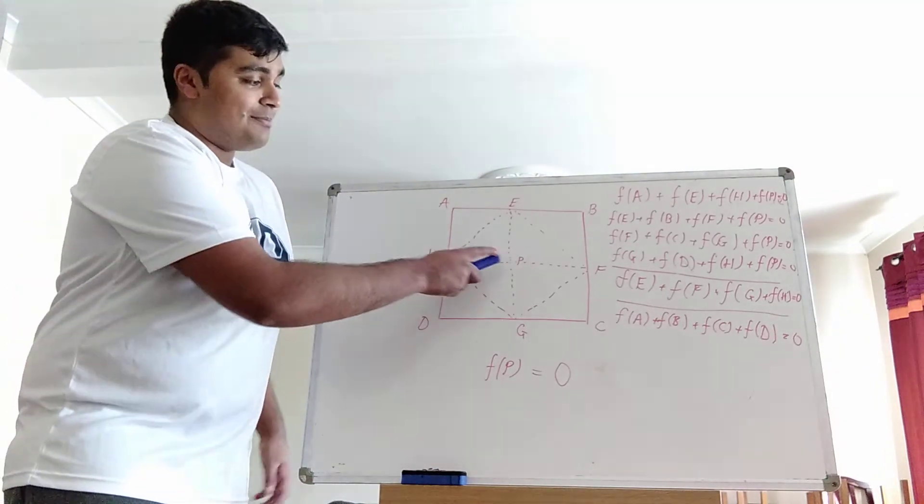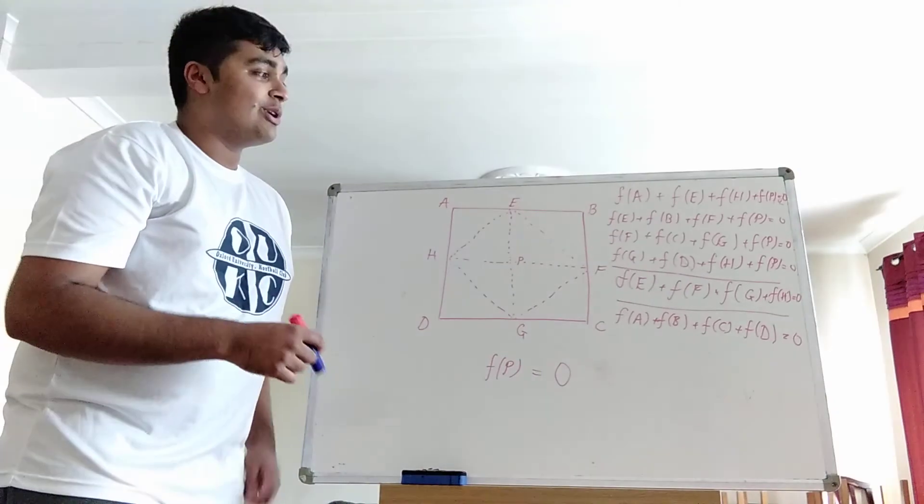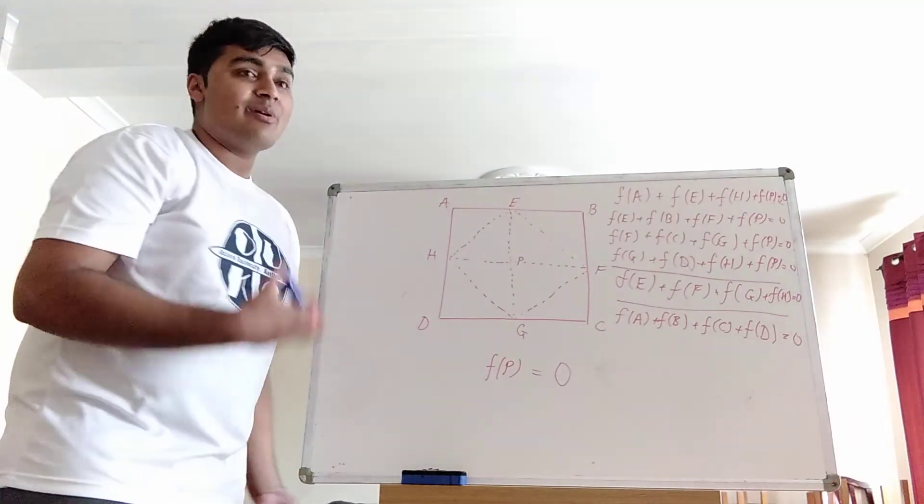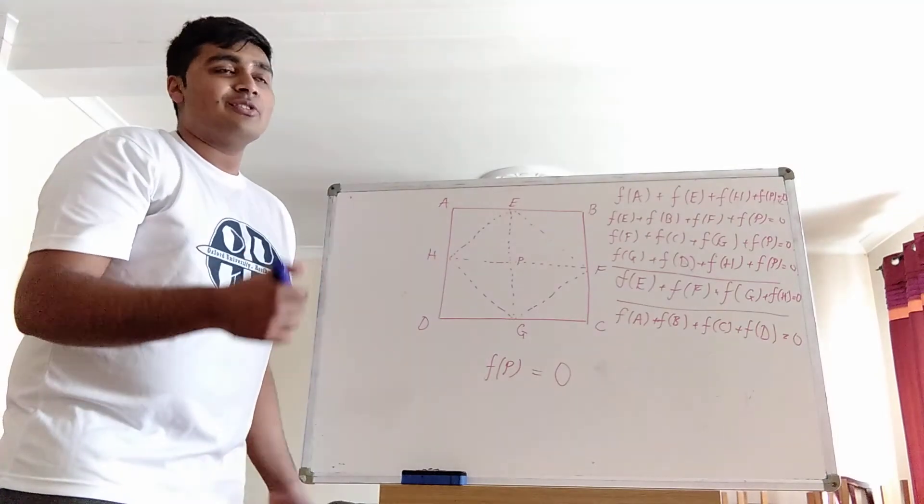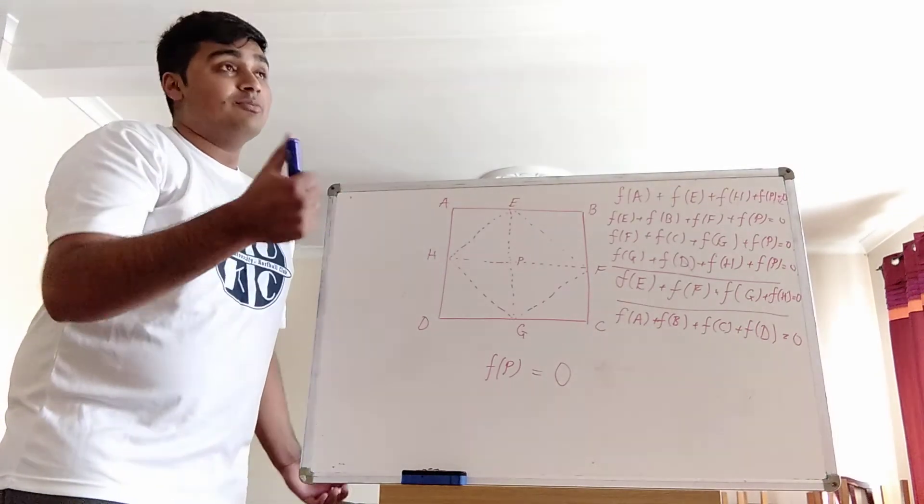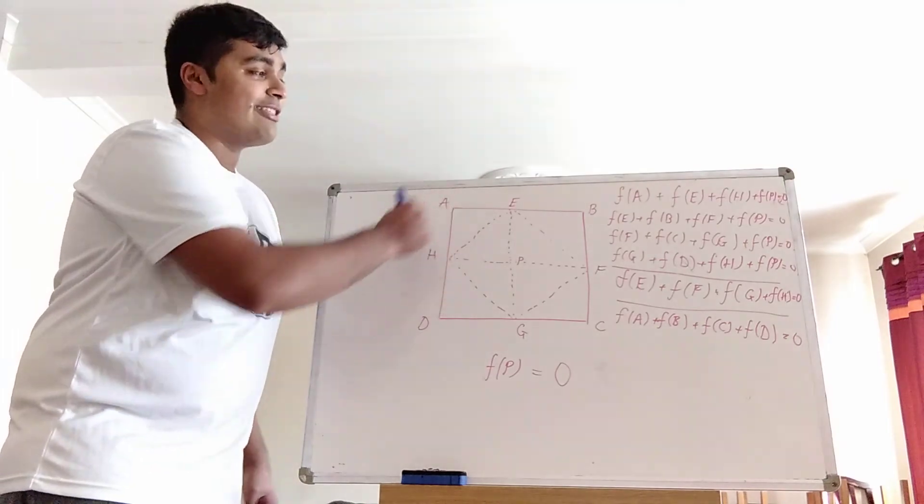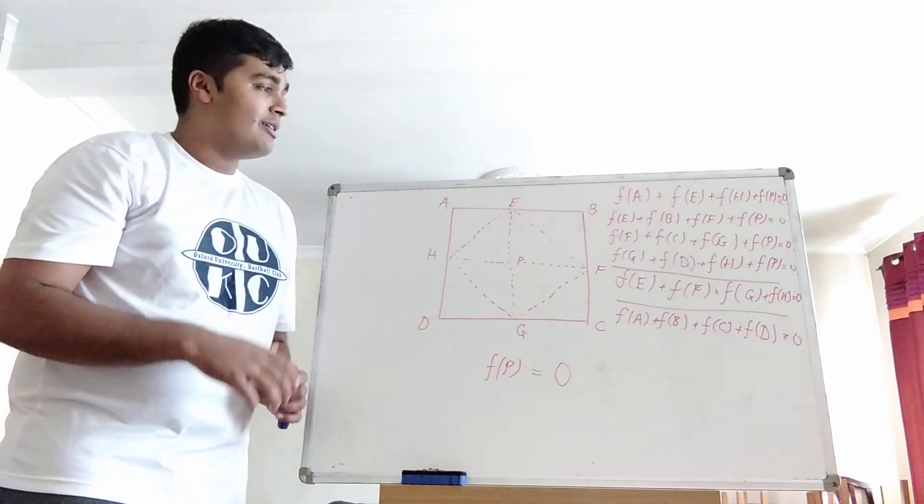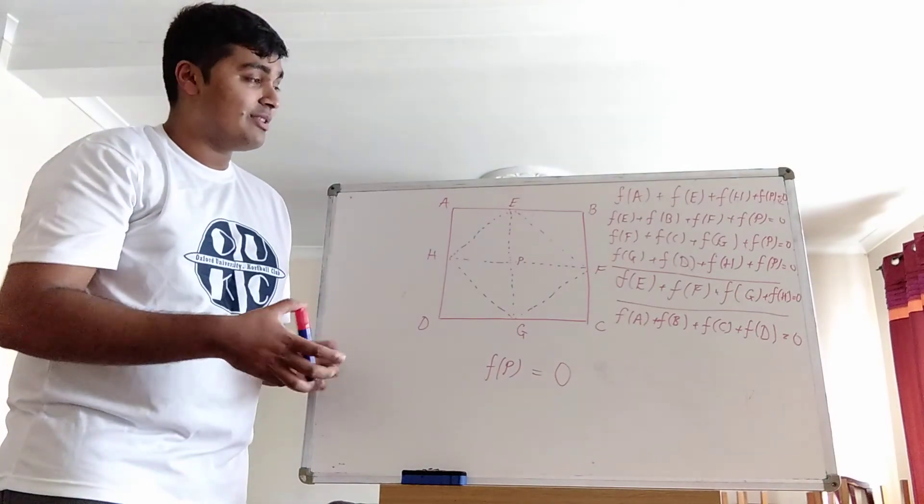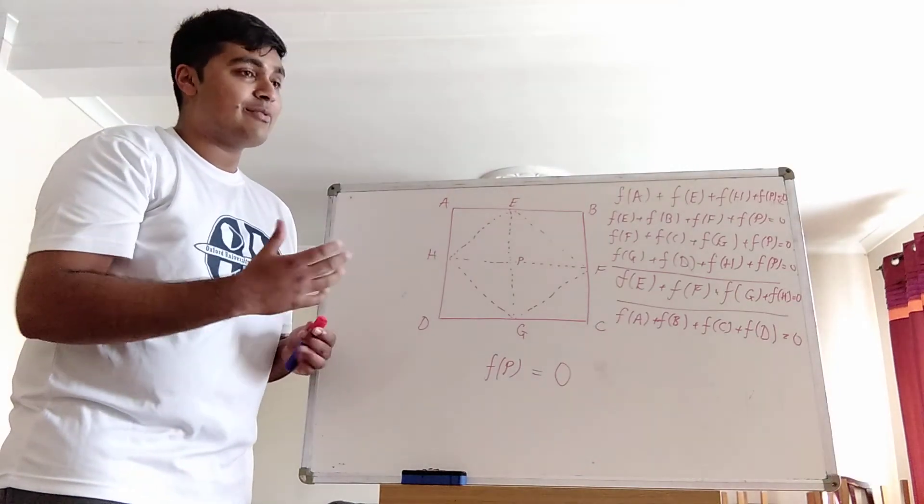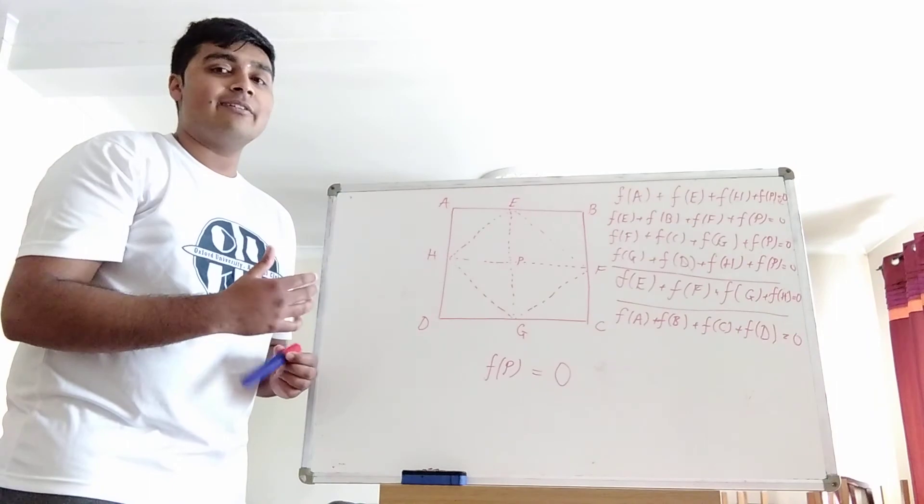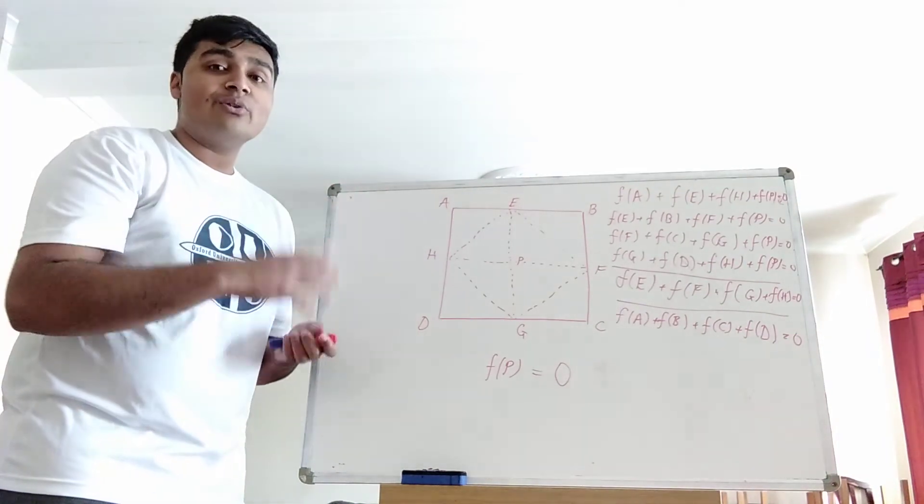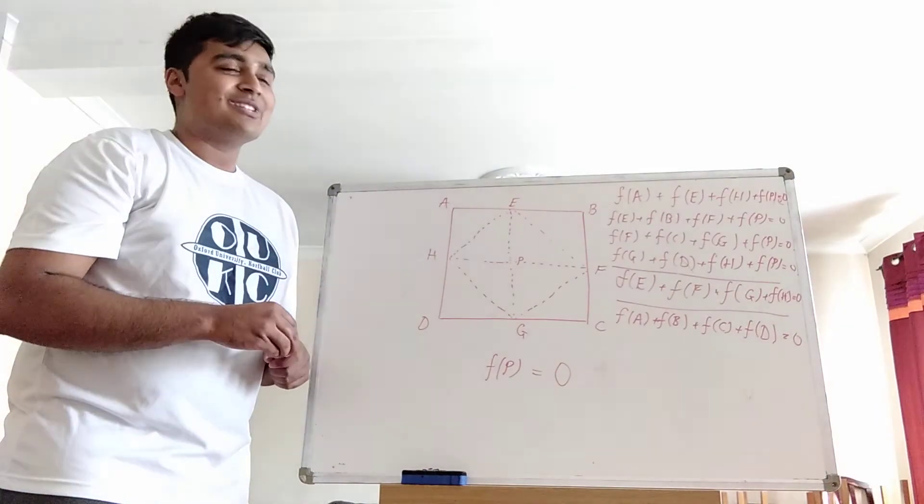Now, remember, if you go back to the start, p was just any point. It was an arbitrarily chosen point on the plane. So because of that, that means f is zero everywhere. Because suppose, for example, take any point on the plane and then just call that point p and apply this exact same argument to deduce that f(p) must be zero. So we've shown that f(p) is zero everywhere, hence f is identically zero. So if we think back to the original question, it must be that f is identically zero, which follows our intuition, which is nice.